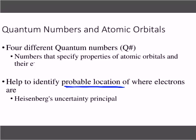The four quantum numbers we're going to get into — you need all four to accurately identify where electrons are located. There are four different ones. Remember Heisenberg's Uncertainty Principle: you can't know the exact location and velocity of an electron at the same time.